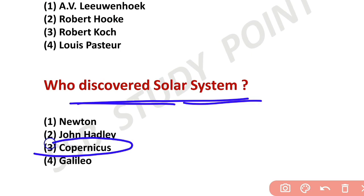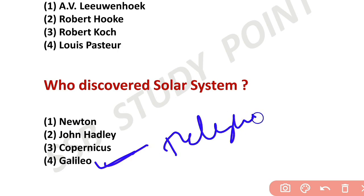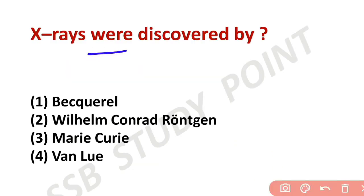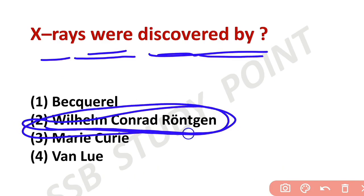Who discovered the Solar System? Copernicus. Galileo invented the telescope. The X-rays were discovered by Wilhelm Röntgen — this is a very important question.